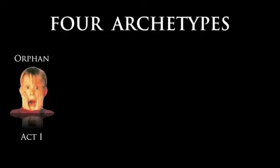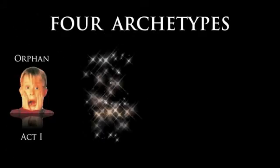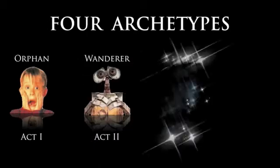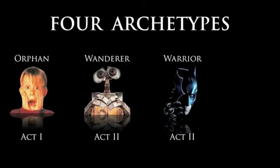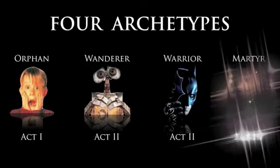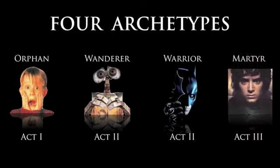Contour utilizes four out of the six archetypes: the orphan, the wanderer, the warrior, and the martyr. Understanding how the protagonist moves through those phases during the course of a story will bring you extremely close to a character-driven script. The hero is, of course, the main character of our story, a.k.a. the protagonist.